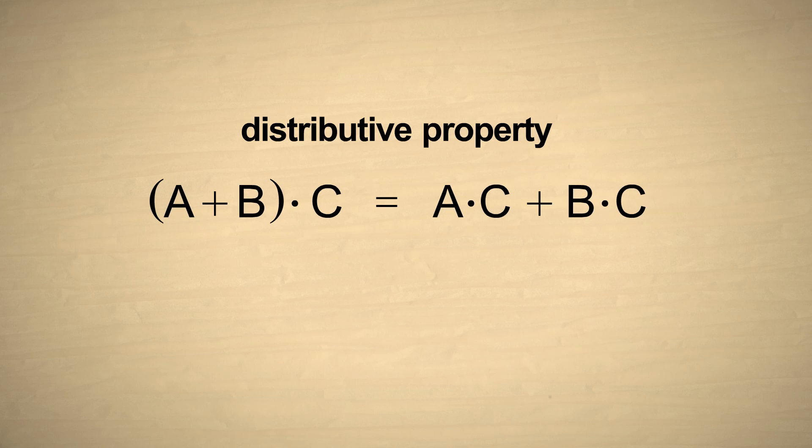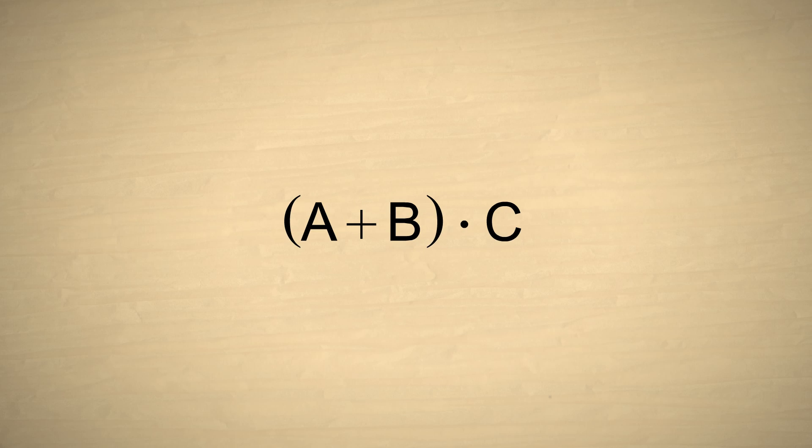Once again, if we use the letters A, B, and C instead of numbers, we can write this property in a more general way. The distributive property says that when a sum of numbers in parentheses are multiplied by a number outside of the parentheses, if we remove the parentheses, then each number inside must be multiplied individually by the number outside.